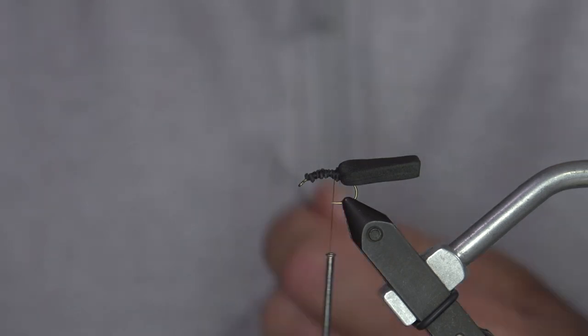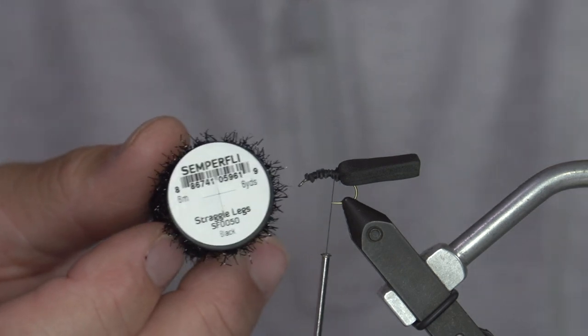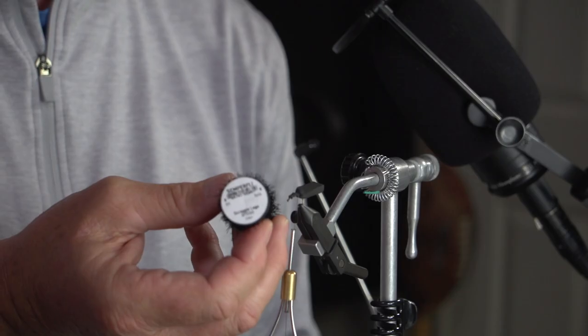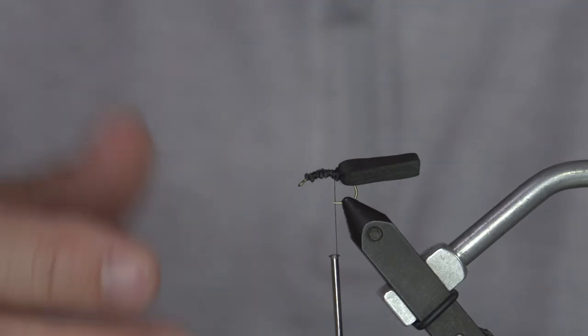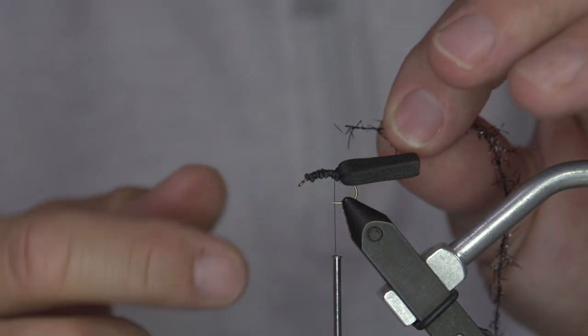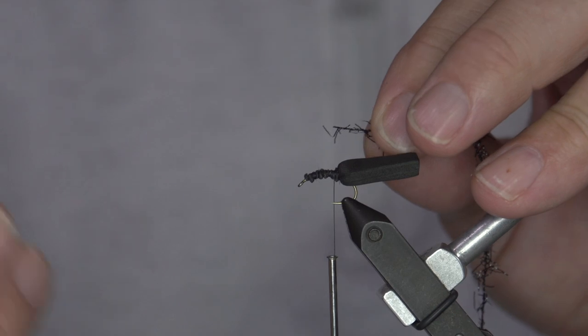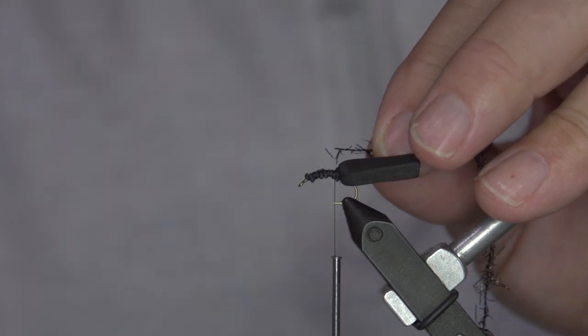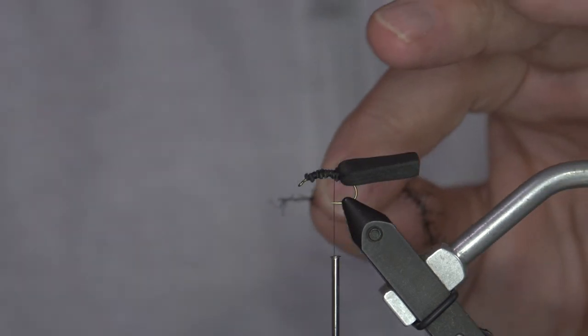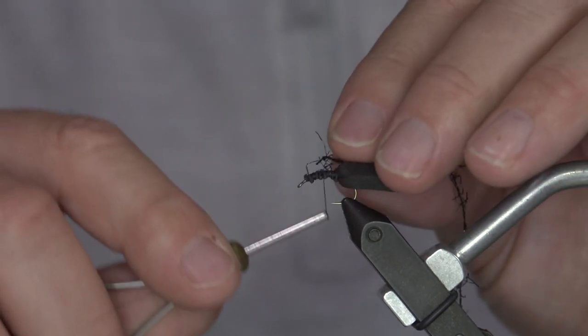Next material: Semperfli straggle legs. These things are awesome. A lot of people like to tie in the peacock herl. The problem with peacock herl is if you get it caught, if a fish tooth catches it, you nick it on a rock, peacock herl pops out, the whole bug is gone or you have to pull that one out and then you risk tearing it apart. With these straggle legs you literally tie it in and it is bulletproof.